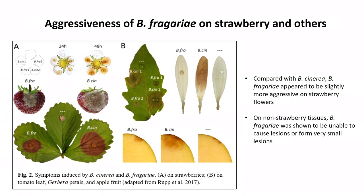A pathogenicity assay on strawberry and other host tissues showed that Botrytis fragariae actually seems to be slightly more aggressive than cinerea on flowers. But with regard to fruit infection, cinerea seems to be more aggressive than Botrytis fragariae. On non-strawberry tissues, fragariae was not able to cause lesions or formed only very small lesions, indicating this new species may have adapted specifically to strawberries.